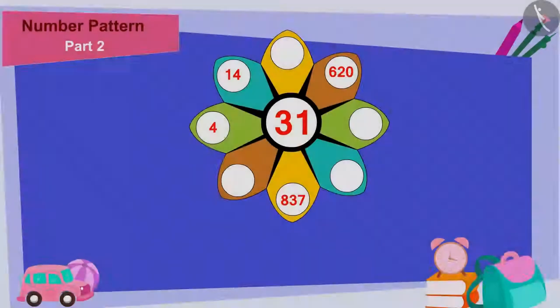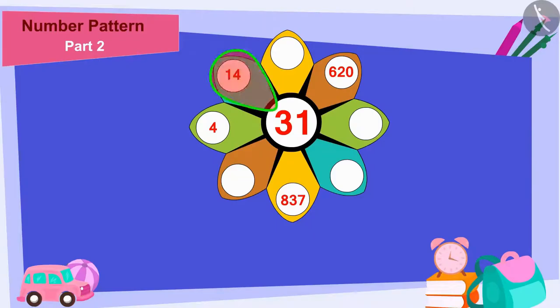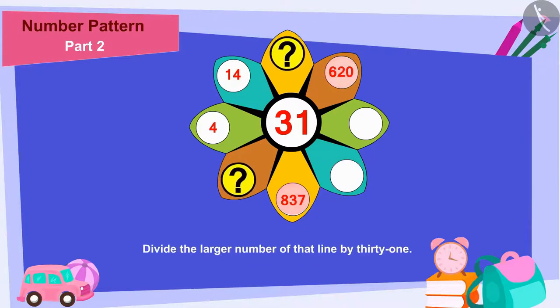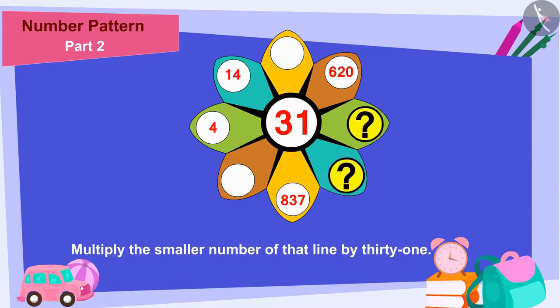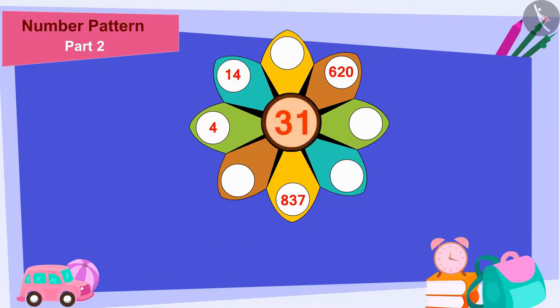There is a smaller number at one end of each line and a larger number at the other end. To find the smaller number for each line, we have to divide the larger number of that line by 31. And to find the larger number, multiply the smaller number of that line by 31. In this way we can fill all the blanks.